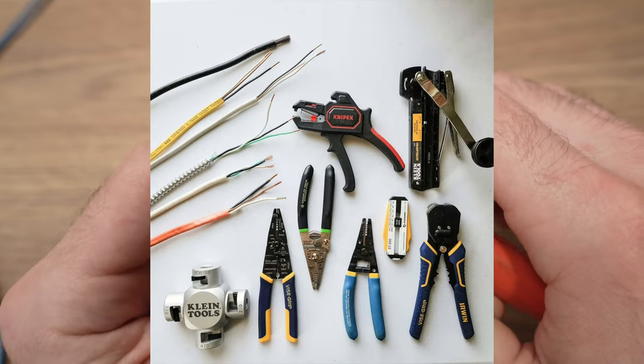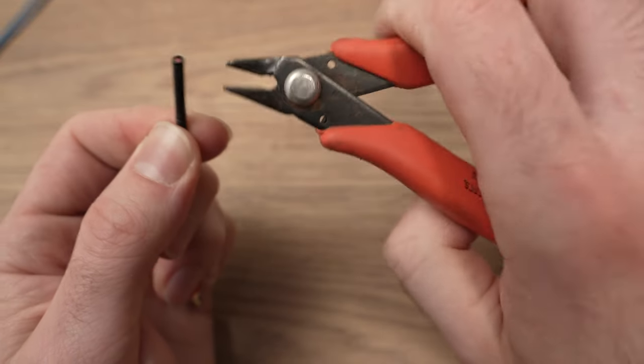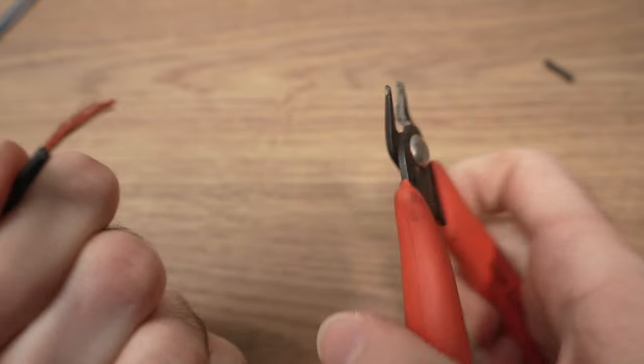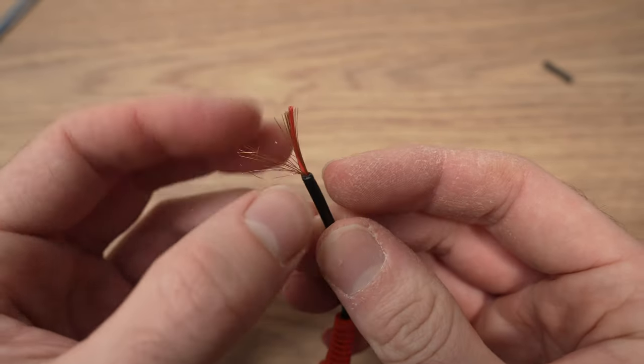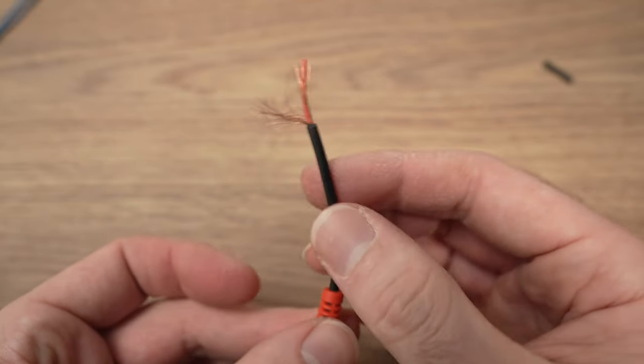Now I do not have any cable stripper, unfortunately. I only have this small cutter over here. Okay, perfect. So if we took a look, we can see that there's two wires inside of this cable.